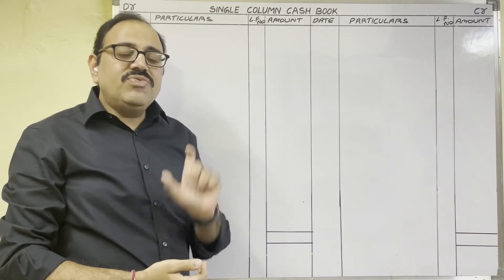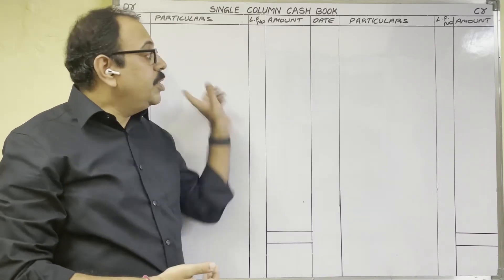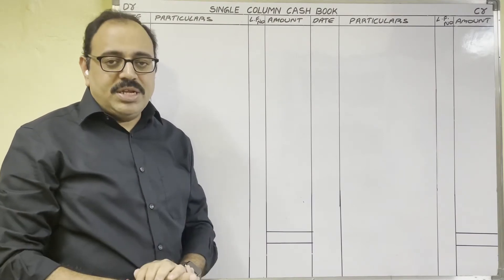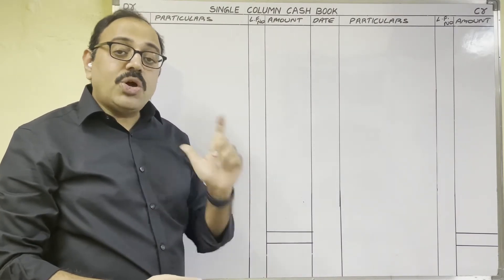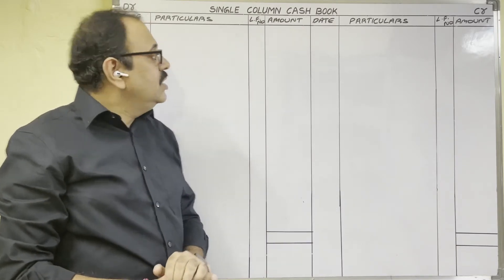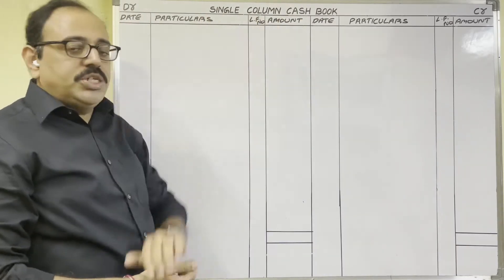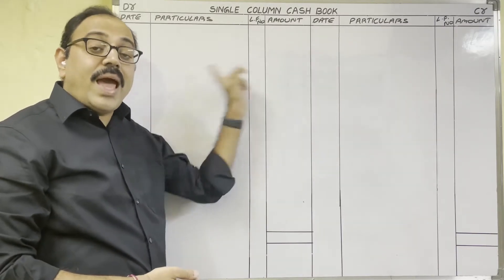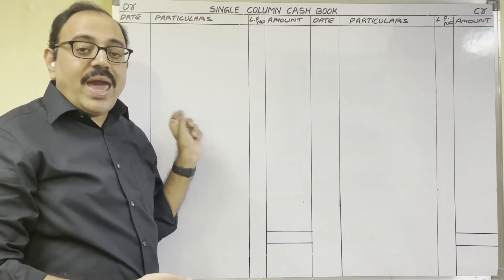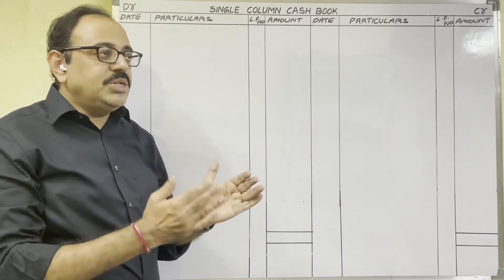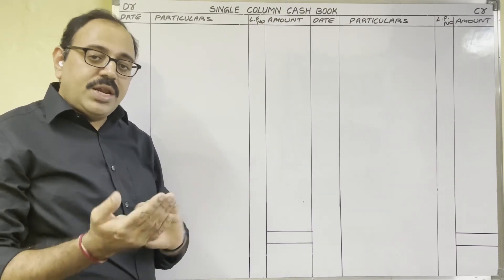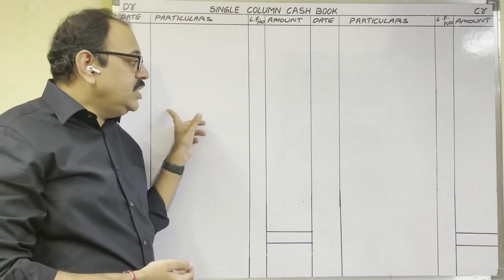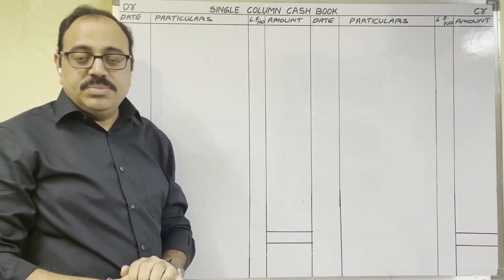Using journal entries for each transaction we can prepare the single column cash book. The second method is the shortcut method. In this video I am going to explain the shortcut method. Here we are preparing the cash book, which is essentially the cash account. Cash account is a real account because cash is an asset, and assets come under real accounts.